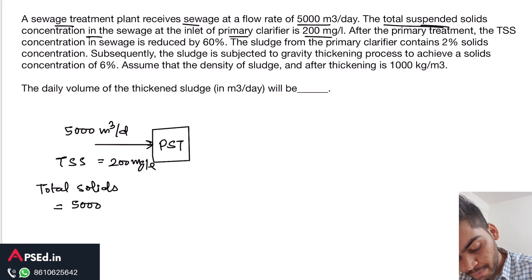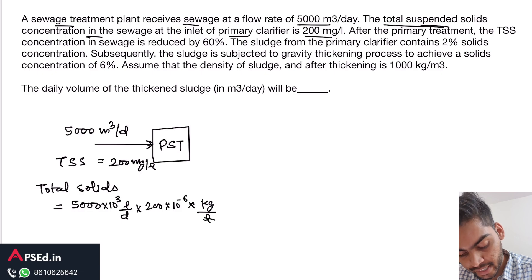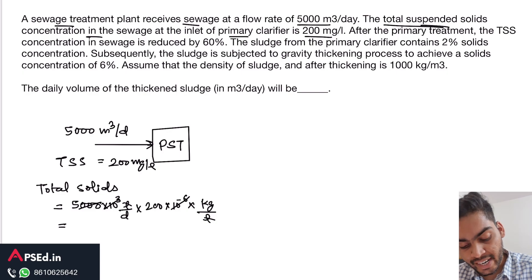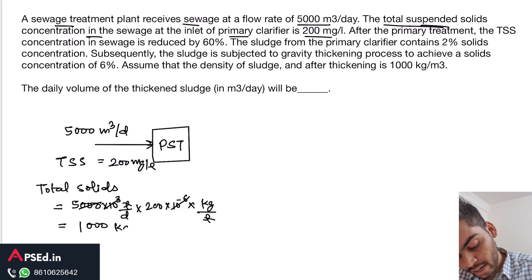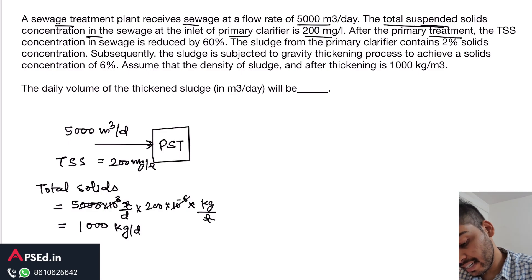Total solids = 5000 × 10³ liters/day × 200 × 10⁻⁶ kg/liter. The liters and the powers of 10 cancel out, giving us a total solids concentration of 1000 kg per day.